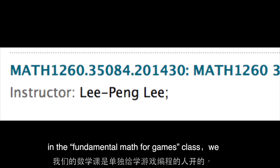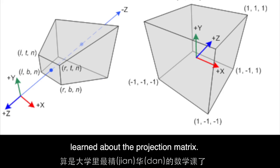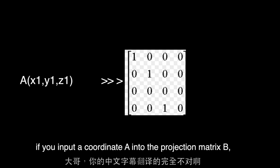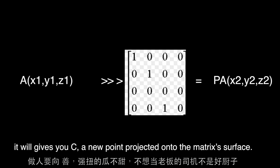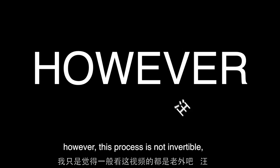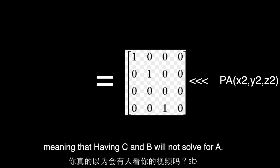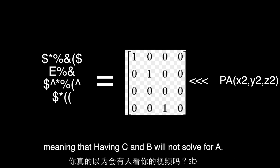In the Fundamental Math for Games class, we learned about the projection matrix. If you input a coordinate A into the projection matrix B, it will give you C, a new point projected onto the matrix's surface. However, this process is not invertible, meaning that having C and B will not solve for A.